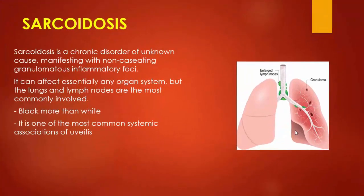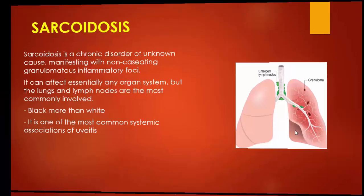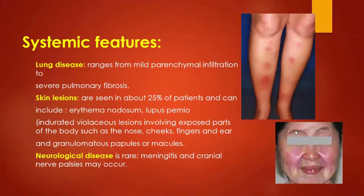Sarcoidosis is a chronic disorder of unknown cause manifested by non-caseating granulomatous inflammatory foci. It can affect any organ, but lungs and lymph nodes are most commonly involved. Black patients are more liable than white patients. It is one of the most common systemic associations with uveitis. Systemic features include lung disease ranging from mild parenchymal infiltration to severe pulmonary fibrosis. Skin lesions include erythema nodosum and lupus pernio, which is an indurated violaceous lesion involving exposed parts of the body such as nose, cheeks, fingers, and ears, with granulomatous papules and nodules.